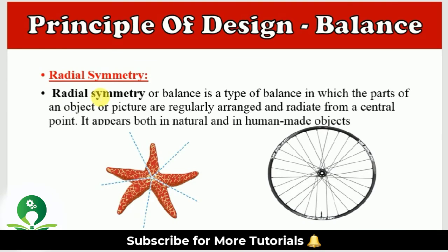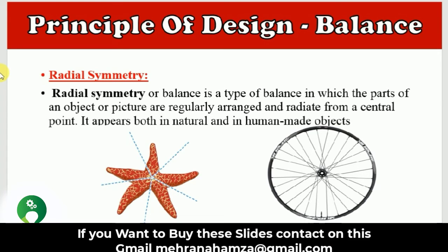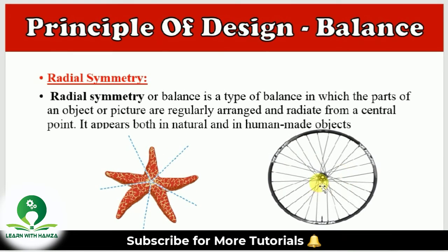The third type of balance is radial symmetry. Radial, as the name suggests, means circle. Radial symmetry or balance is a type of balance in which the parts of an object or picture are regularly arranged and radiate from the central point. Radial symmetry exists in both natural and human-made objects. For example, a starfish is a natural example where lines radiate from the central point. Similarly, in a wheel, which is a human-made object, you can clearly see radial symmetry. This is all about the first principle of design: balance.